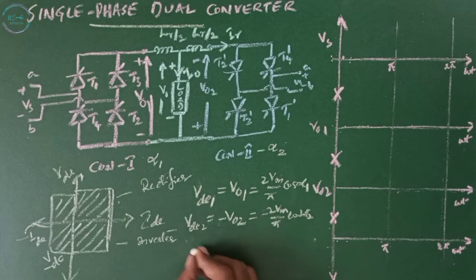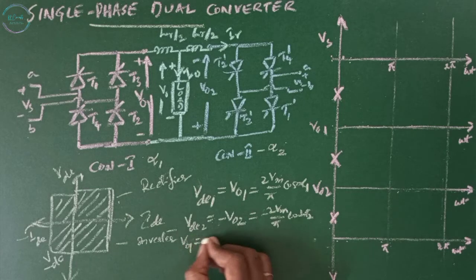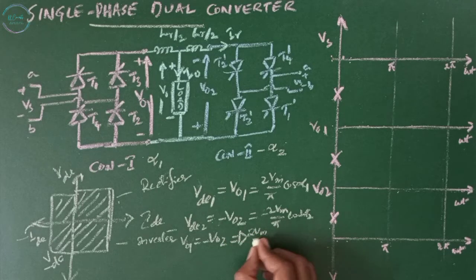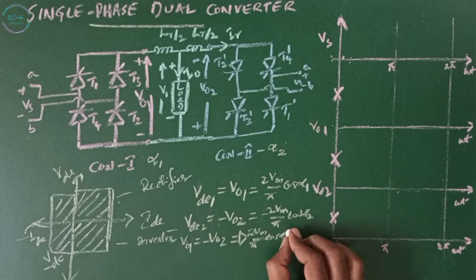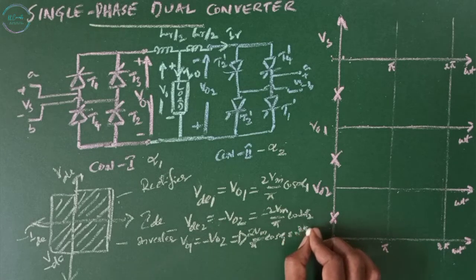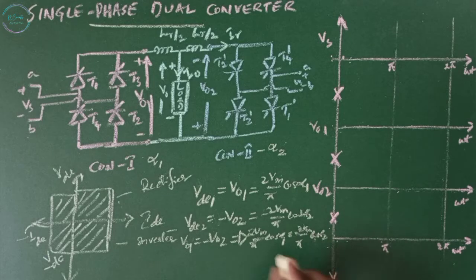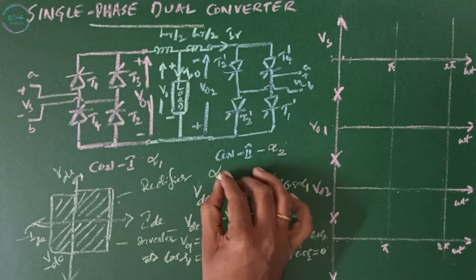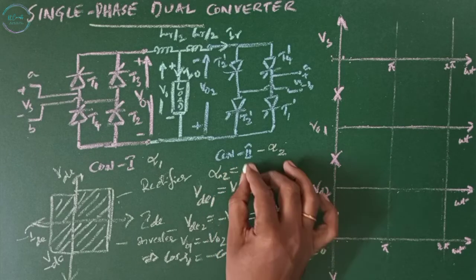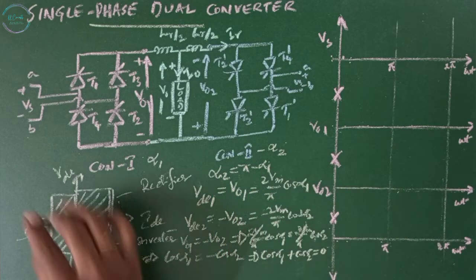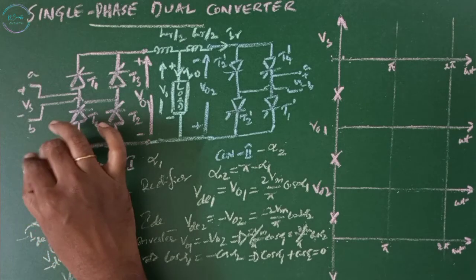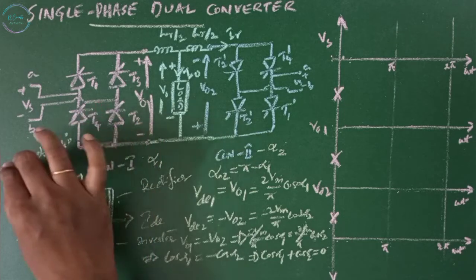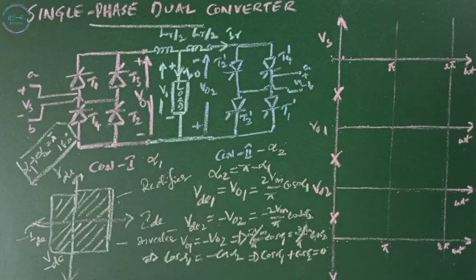From these two equations we can write V0 one equals minus V0 two, from which we get two Vm by pi times cos alpha one equals two Vm by pi times cos alpha two. This gives us cos alpha one equals minus cos alpha two, which means alpha two equals pi minus alpha one. In a dual converter, alpha one plus alpha two equals pi, or 180 degrees. This is the condition to operate a dual converter.